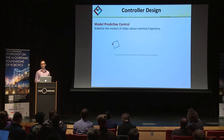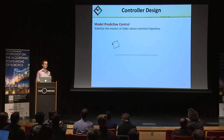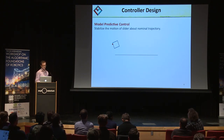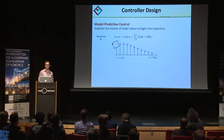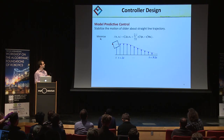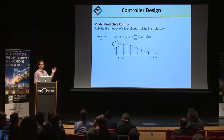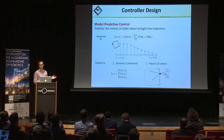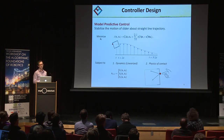Our controller design is based on model predictive control, where the goal is to stabilize the motion of the object about a nominal trajectory. At each instant, you define an optimization program where the objective is to find a sequence of velocities that minimizes some notion of error between the slider and the nominal trajectory over a finite horizon. We subject the search to the system dynamics linearized about the desired trajectory and the physics of contact — meaning the friction cone constraints.